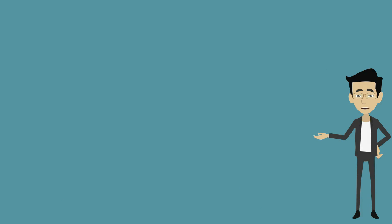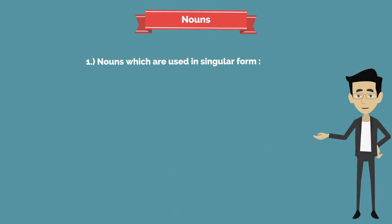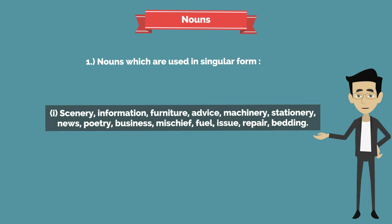Now let's see some of the rules of using nouns. First, nouns which are used only in singular form: scenery, information, furniture, advice, machinery, stationery, news, poetry, business, mischief, fuel, issue, repair, bedding.